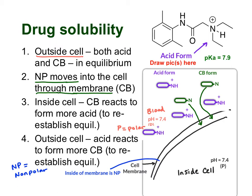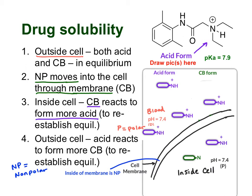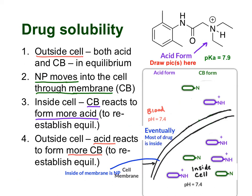Once the conjugate base gets through the membrane, it's on the inside and it's no longer in equilibrium — we only have the product side. So once it forms an equilibrium of its own, it's going to start converting back to form more of the acid form. Then on the outside of the cell, the acid is reacting to form more conjugate base. We've removed the product, so we're going to get more product formed from the acid form — that's Le Chatelier's principle at work. Those new conjugate base molecules will now be able to go through the membrane again, and the whole process will continue.